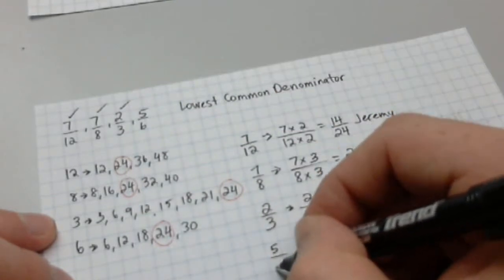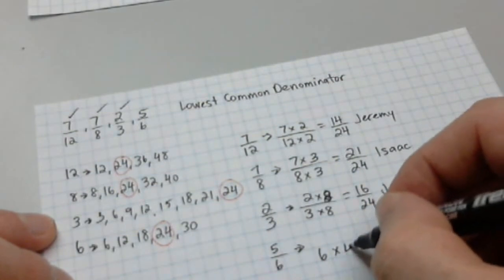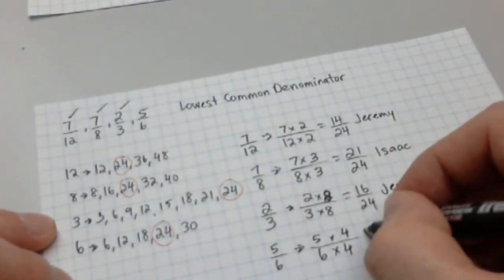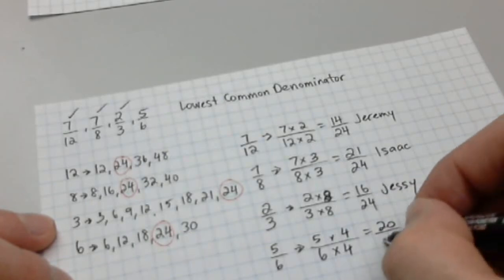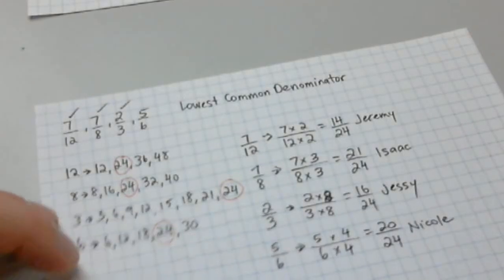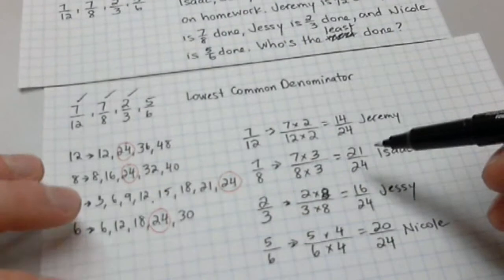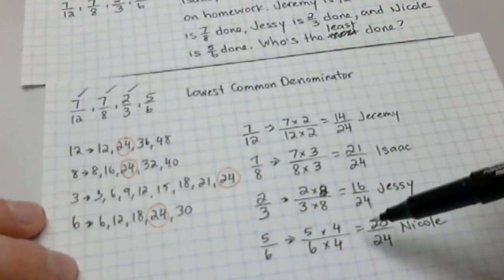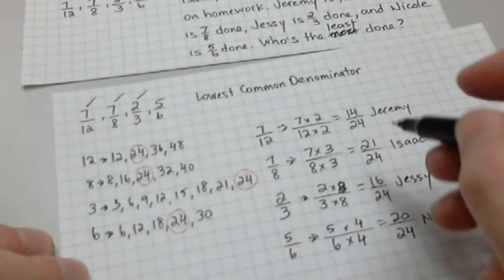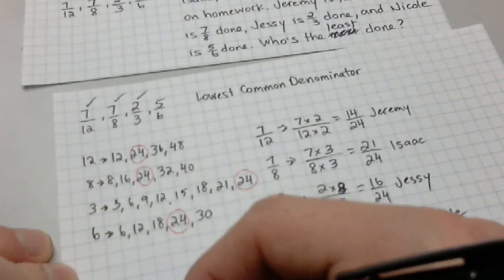And then lastly, Nicole. I want to get from 6 to 24. So, that's 6 times 4. Top and bottom times the same number. Which gives me 20 over 24 for Nicole.